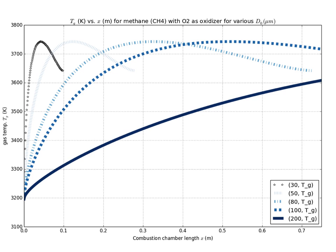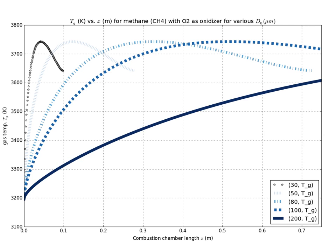Here we have a plot of Tg versus x for methane with O2 as oxidizer. This graph is important because for D_0 equal to 30, 50, and 80 microns, early on in the combustion chamber length we see steep temperature gradients for Tg. Because Fourier's law states that the gradient of temperature is proportional to heat transfer, we have huge heat transfer rates at the beginning of the combustion chamber, which could seriously melt our injector plate. This is a problem we see with smaller D_0 values.